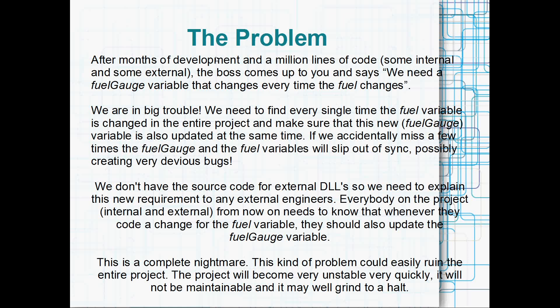The project will become really unstable really quickly. If we go through the whole codebase trying to change all references to fuel and add a second line to change fuel gauge, and try to tell all external engineers to do the same, eventually that's going to fall apart. It's not maintainable, and the project is going to grind to a halt. The boss made a perfectly normal request — he wants another variable added — but trying to solve this problem the naive way just won't work.